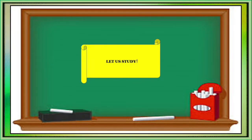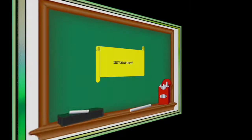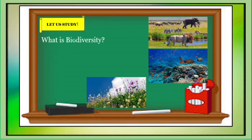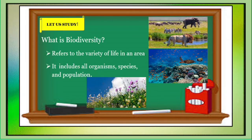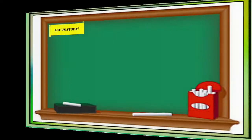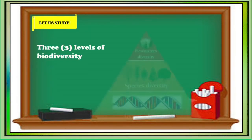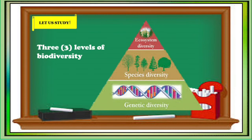Now it's time to learn new things, so sit back and jot down notes as you listen. First, we will take up what biodiversity is. Biodiversity refers to the variety of life in an area. It includes all organisms, species, and populations. There are three levels of biodiversity: genetic diversity, species diversity, and ecosystem diversity.